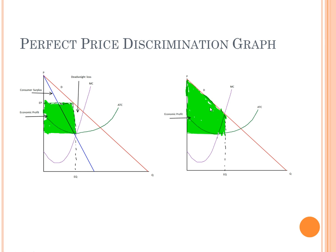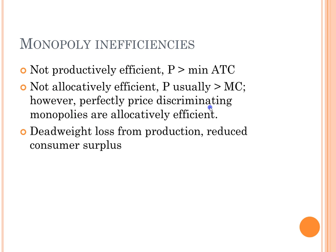In a traditional monopoly, it is neither productively nor allocatively efficient. It's not allocatively efficient because it produces at the profit-maximizing output, which is at an extremely high price but low output. It's not productively efficient because the price is not produced at the minimum ATC — the monopoly produces too little output to truly maximize economies of scale and fully utilize its fixed inputs. This causes deadweight loss, and the economic profit the monopoly absorbs causes less consumer surplus.